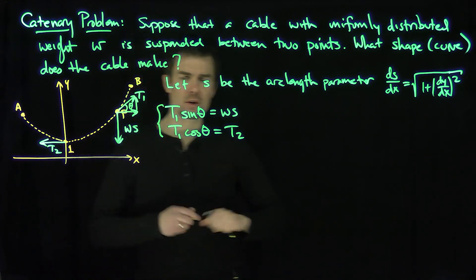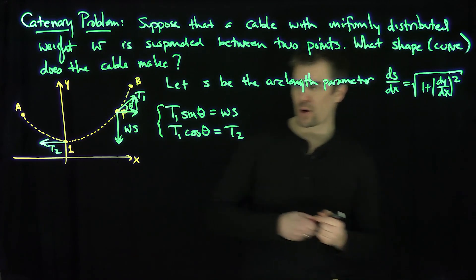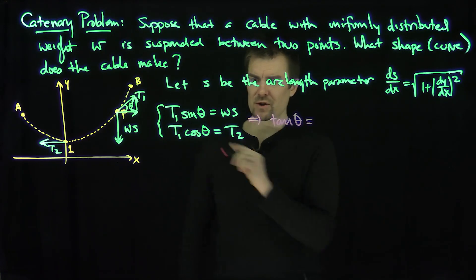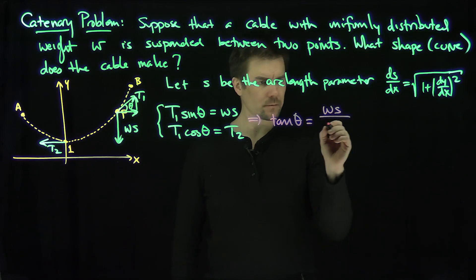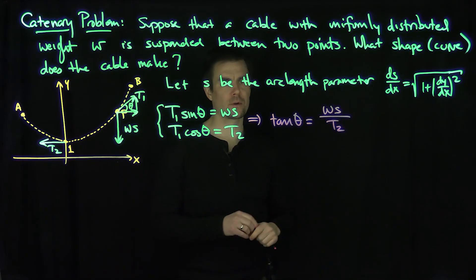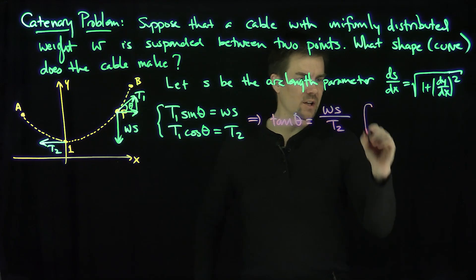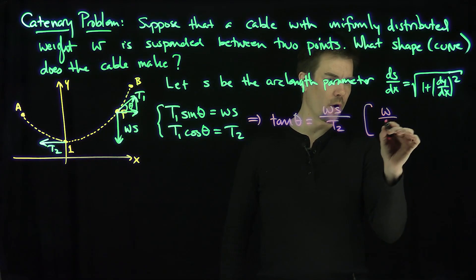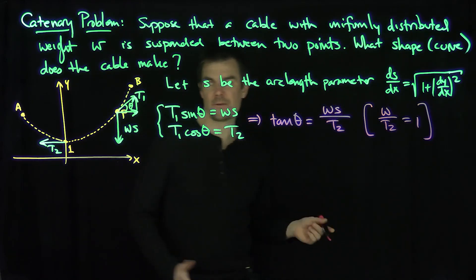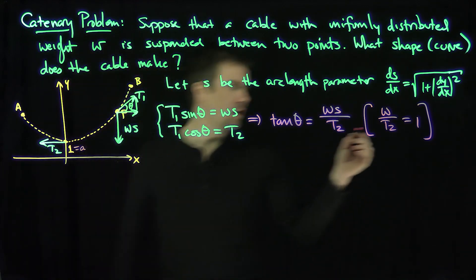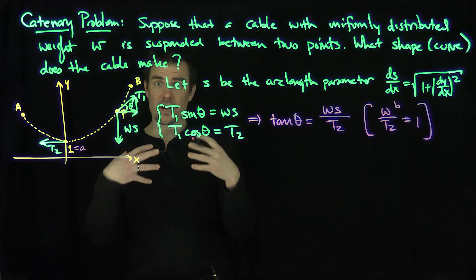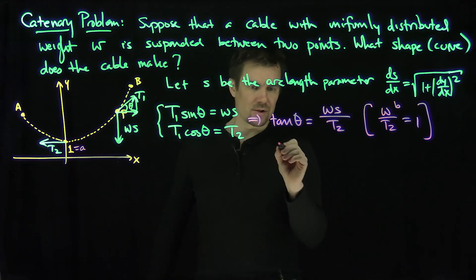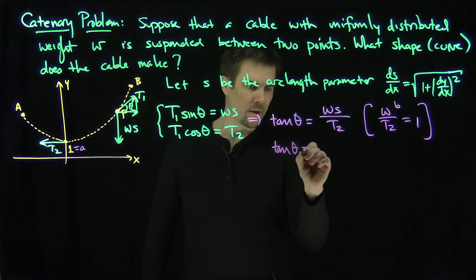We can divide these two equations by one another. Dividing the top equation by the bottom equation, we conclude that tangent of theta is equal to Ws over T2. Now I'm going to assume, just as I assumed the height above the x-axis was one, that the uniform weight over the tension T2 is equal to one, to make calculations easier. That tells me that the tangent of theta is equal to s.